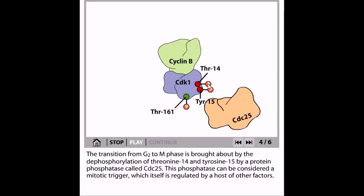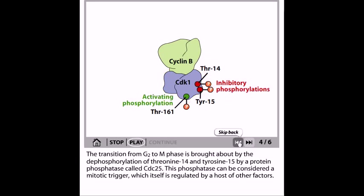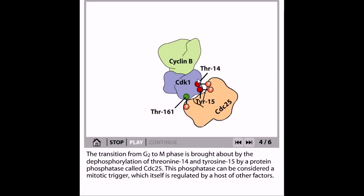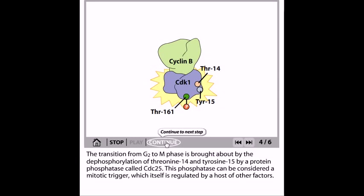This dephosphorylation is done by a protein phosphatase called CDC25. CDC25 comes in and dephosphorylates threonine 14 and tyrosine 15, leading to the production of active CDK1-cyclin B complex. This phosphatase can be considered as a mitotic trigger, which itself is regulated by a host of other factors.